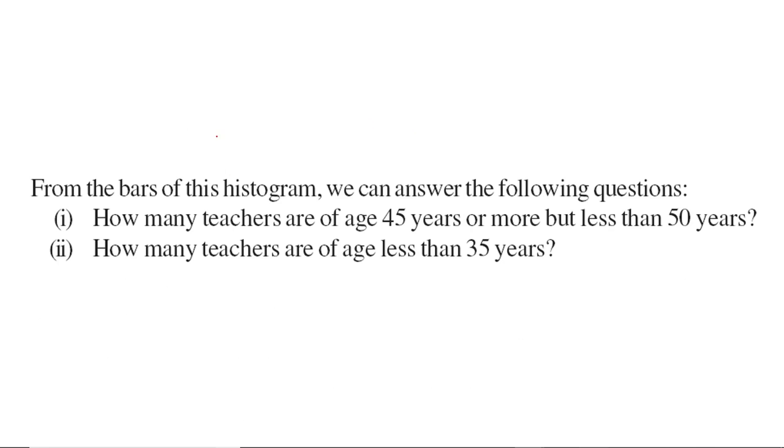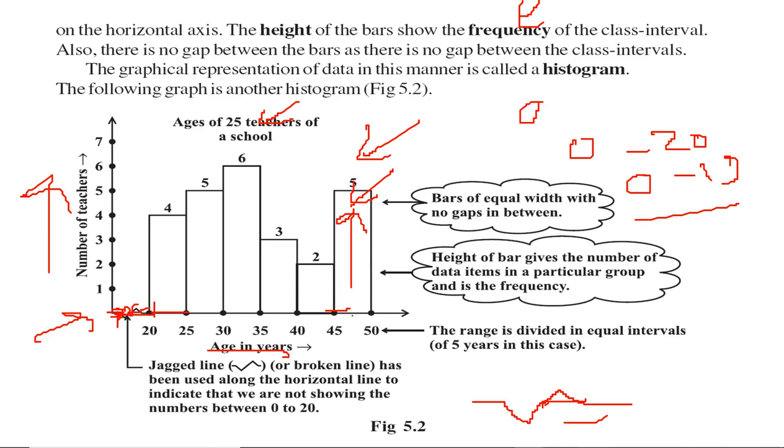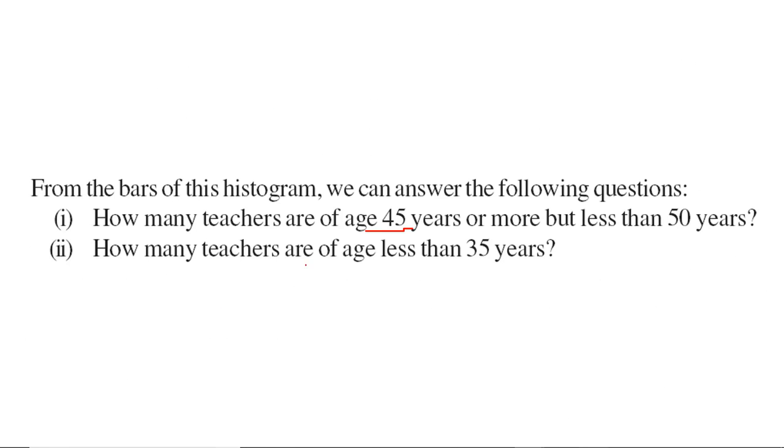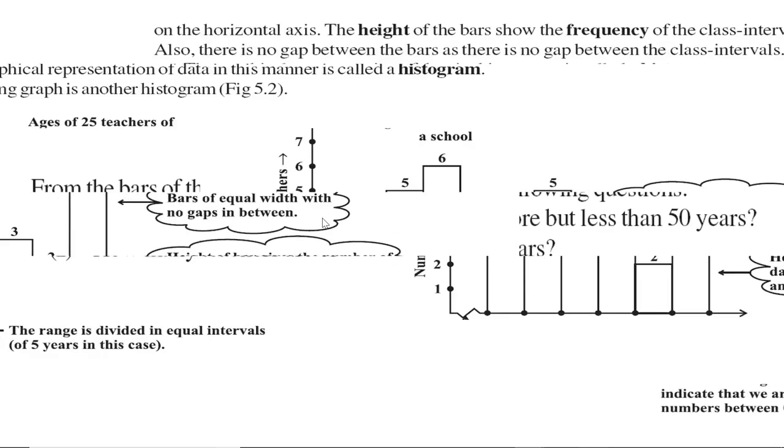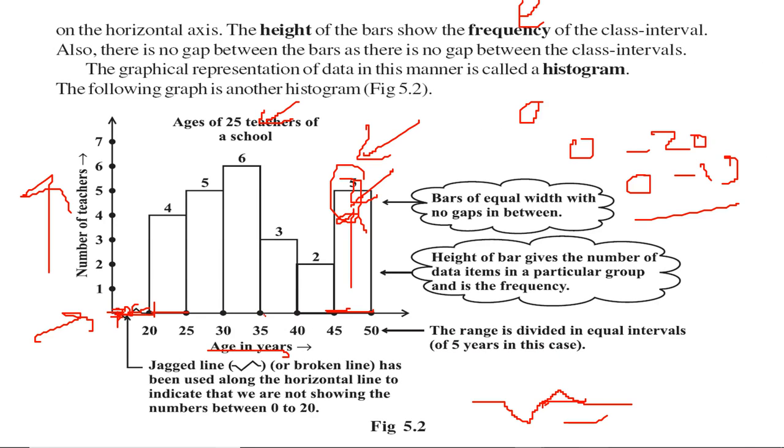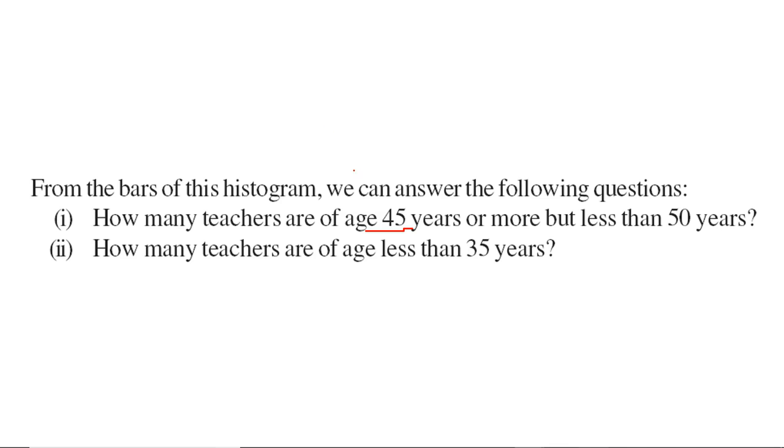From this graph we can easily answer questions like: How many teachers are of age 45 years or more but less than 50 years? That's 5. How many teachers are of age less than 35 years? This is 35 years, so we take from this point to this point: 6 plus 5 plus 4, that will be 15. This is how we answer, and this is the bar with the difference.